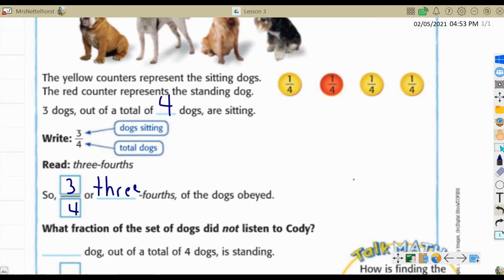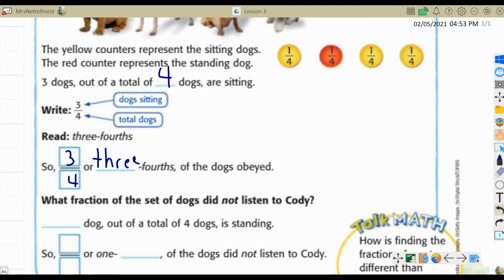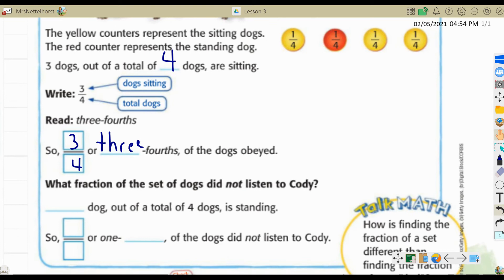What fraction of the set of dogs did not listen to Cody? So there is one dog out of a total of four dogs that are standing. So one-fourth of the dogs did not listen to Cody.